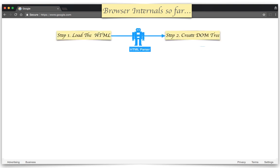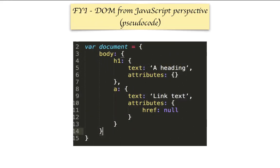The HTML parser simply takes the raw HTML and converts it into the DOM. Here is how a DOM looks from a JavaScript perspective: you have a document object that has a child body object, which in turn has an h1 element and sibling child objects.